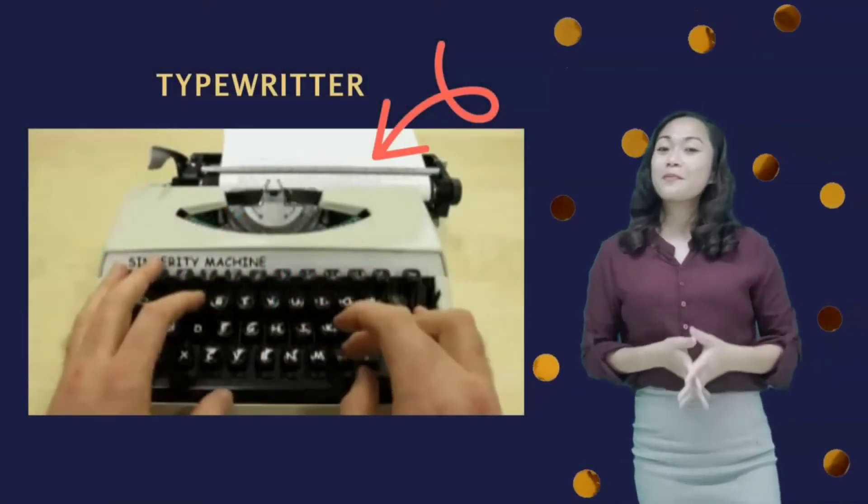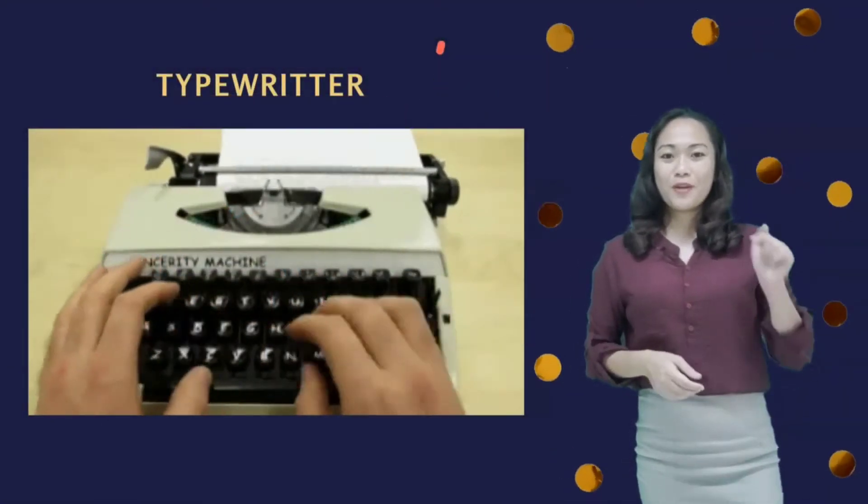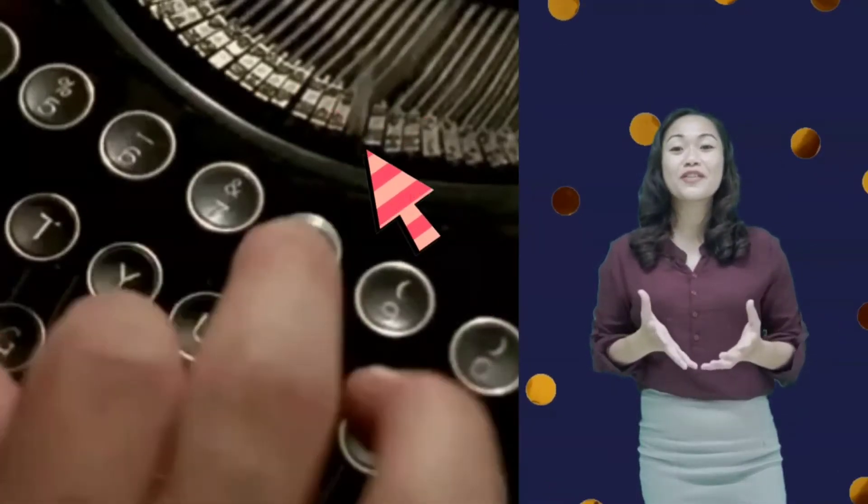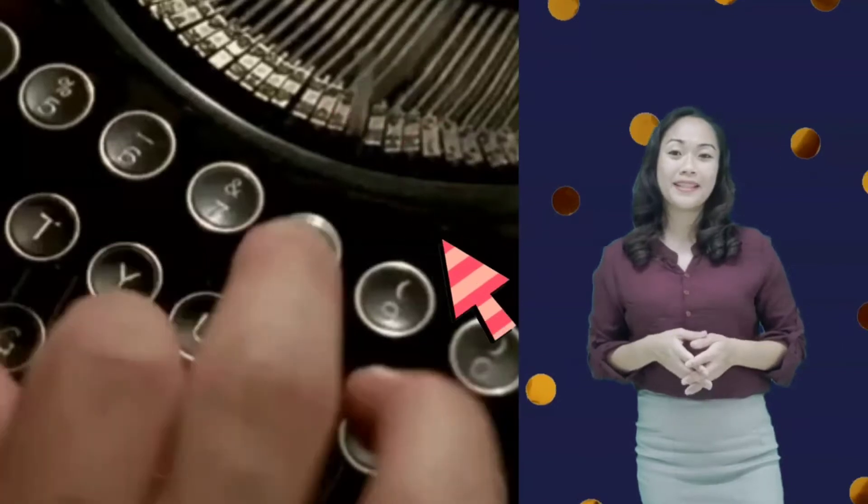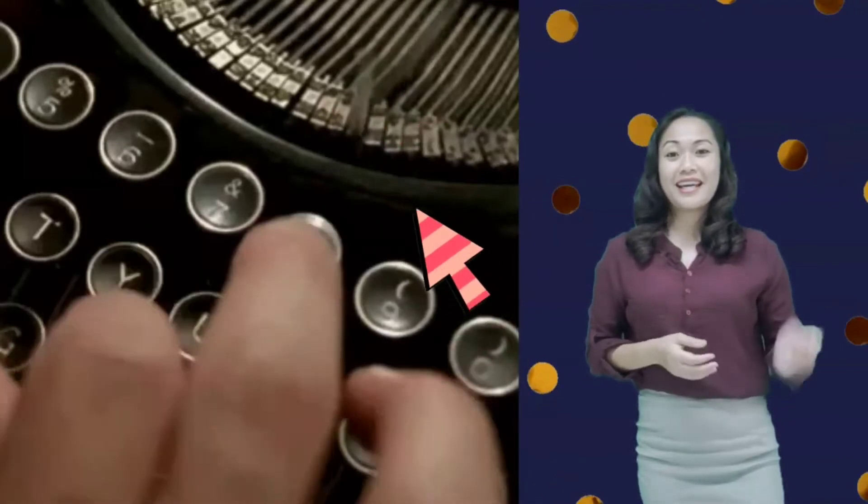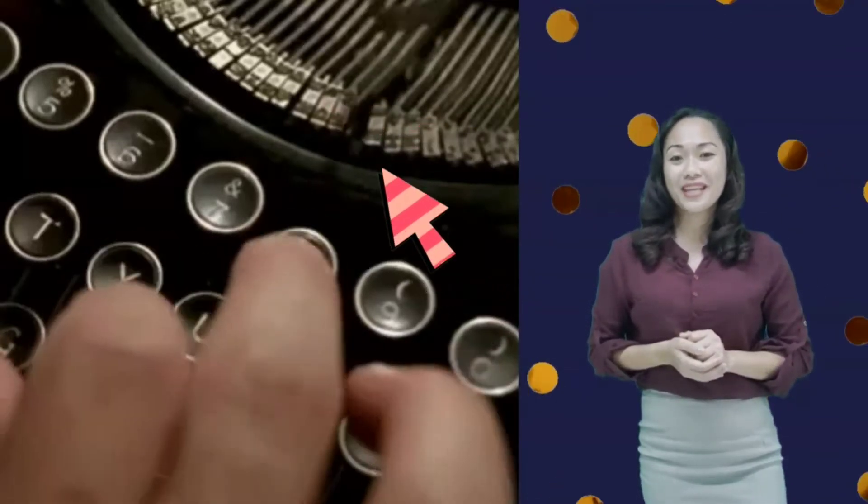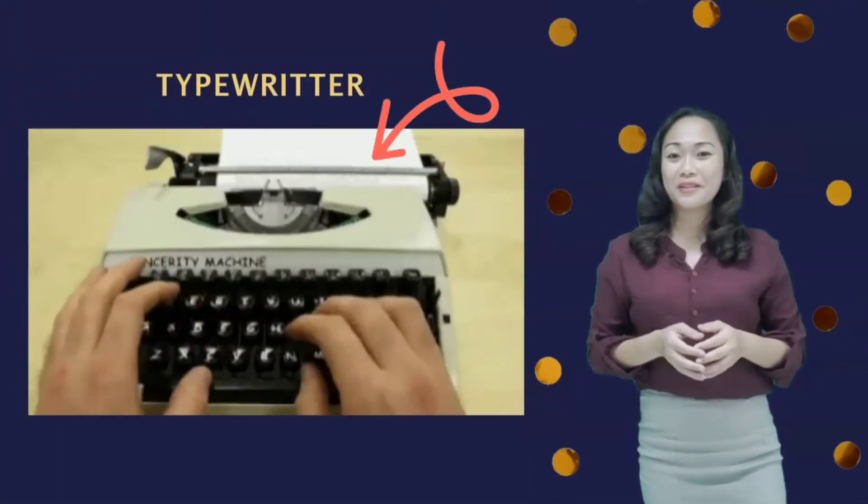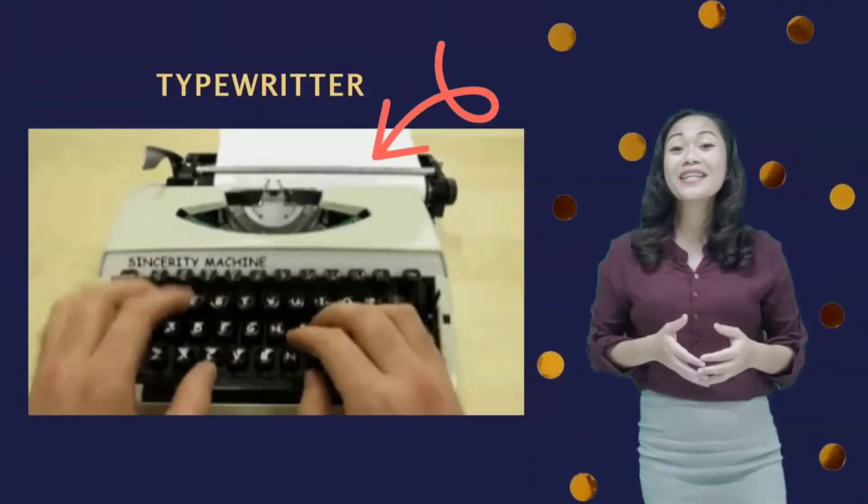The principle of its work is very simple. When you push the button of the letter, it activates a lever with a cast of this letter on its top. This lever hits the ribbon soaked with ink, which sits between the lever and the paper. That is how we get the print.